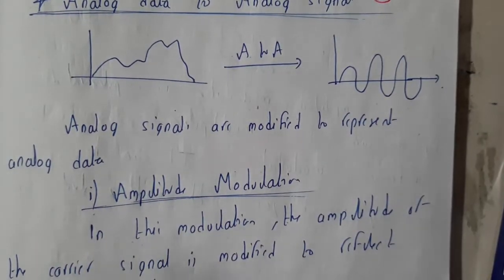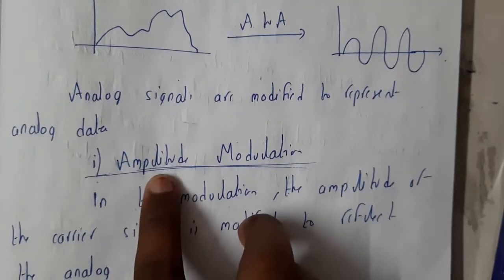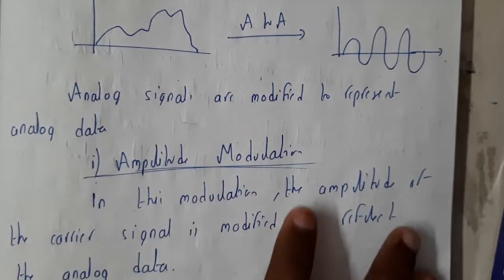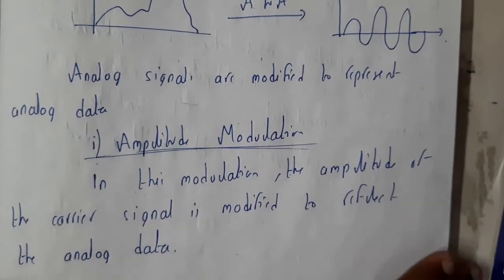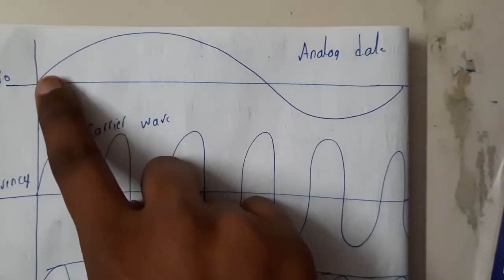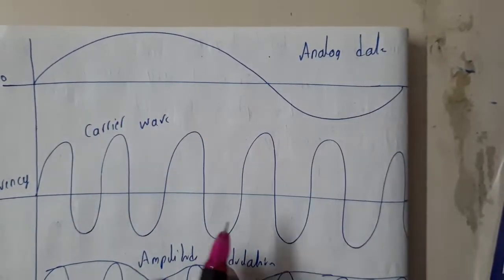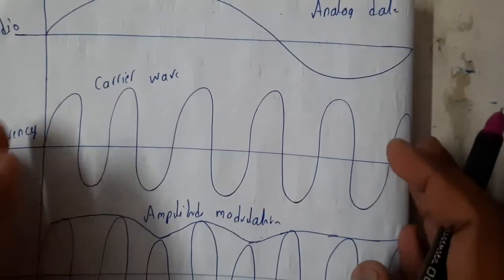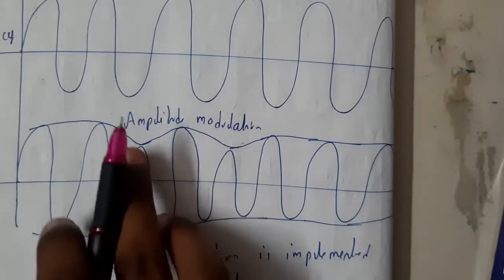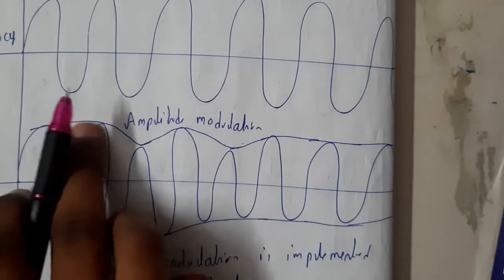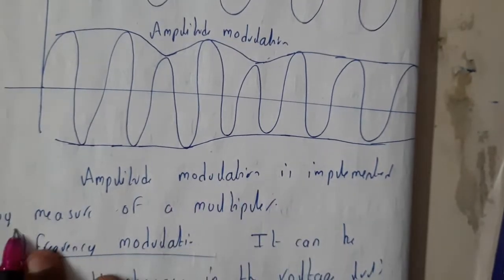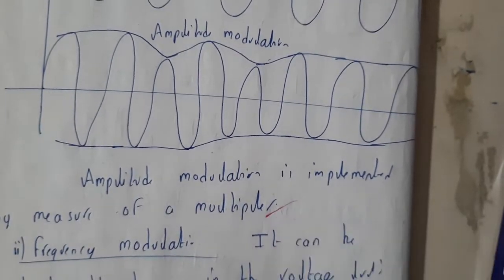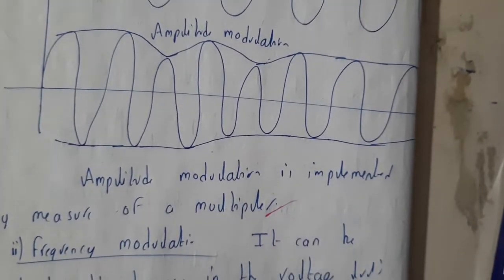Analog signals are modified to represent analog data. In amplitude modulation, the amplitude of the carrier signal is modified to reflect the analog data. So let us assume this is our original audio signal, and our carrier wave — once you pass it through amplitude modulation, it becomes like this, like a music wave. Amplitude modulation is implemented by using multiplexers.